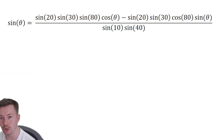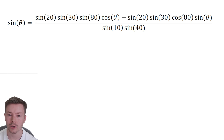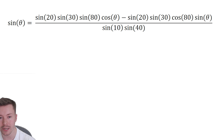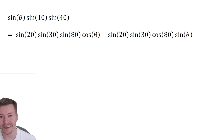Don't panic — we expand it and we get sine 20 sine 30 times sine 80 cos theta, and then times cos 80 sine theta. Although it looks messy, I can see I have a sine theta term and a cos theta term. If I collect the sine thetas I should be able to factorize them out, and it should all work out. Next, I'll multiply left and right by sine 10 sine 40 to clear the fraction, giving: sine theta times sine 10 sine 40 equals this numerator.